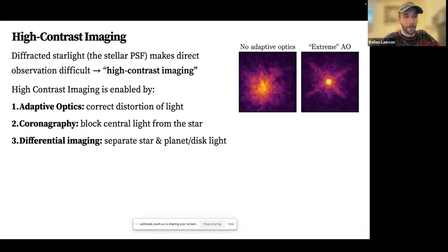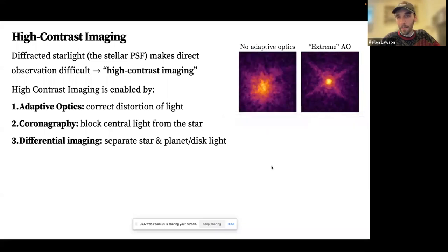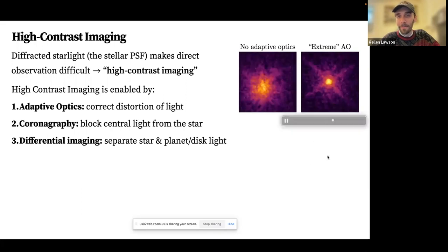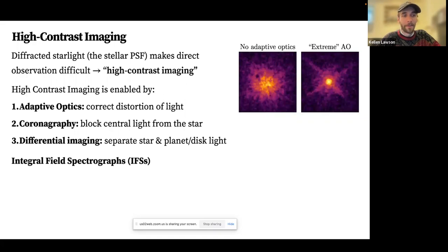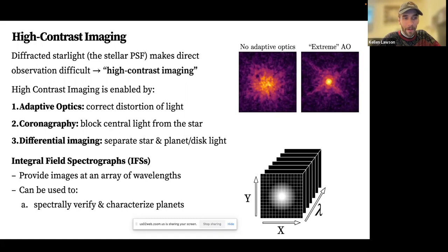High contrast imaging relies on three key technologies. First, adaptive optics, which correct for distortion of the incoming light — primarily atmospheric distortion for ground-based observatories. Second, coronography, which blocks the intense central light of the parent star to ease recovery of nearby circumstellar signal. Third, differential imaging techniques, which help separate planet and disk light from stellar light. These observational techniques are combined with post-processing algorithms to effectively separate star and circumstellar light. More recently, integral field spectrographs (IFSs) have further enhanced these capabilities by providing images across an array of wavelengths.